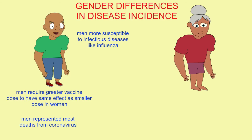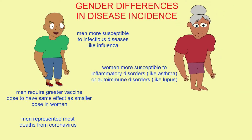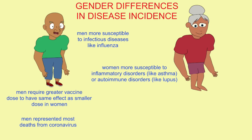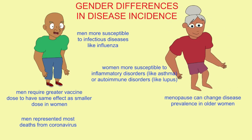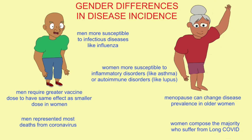Women, in contrast, make up the majority of those who suffer from some inflammatory disorders such as asthma, or the majority of those who have autoimmune disorders like lupus. Menopause can change disease prevalence in older women, as their estrogen levels drop and their immune function can change. Women also compose the majority of those who suffer from long COVID — the prevalence of coronavirus symptoms long after the infection has passed.